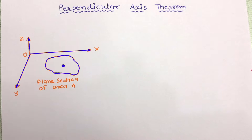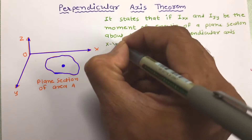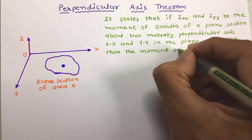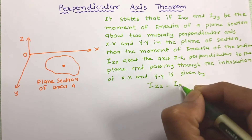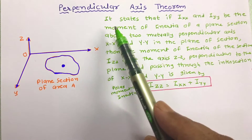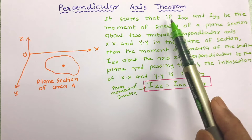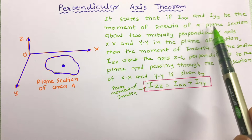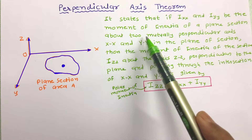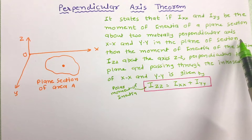So let us start with the statement of the Perpendicular Axis Theorem. According to the statement, it states that if IXX and IYY be the moment of inertia of a plane section about two mutually perpendicular axes XX and YY in the plane of the section,